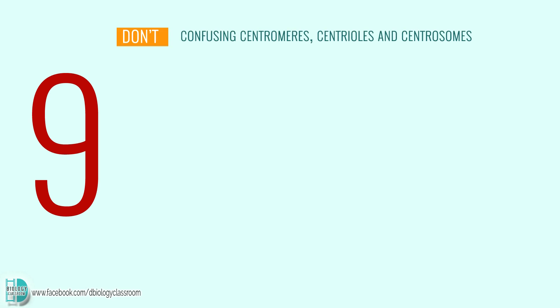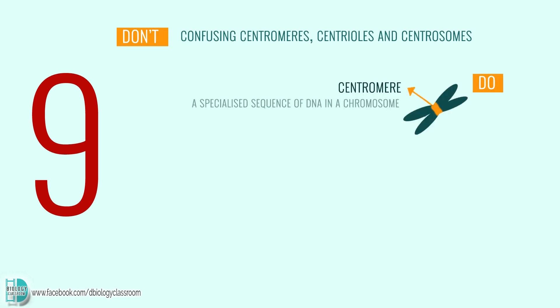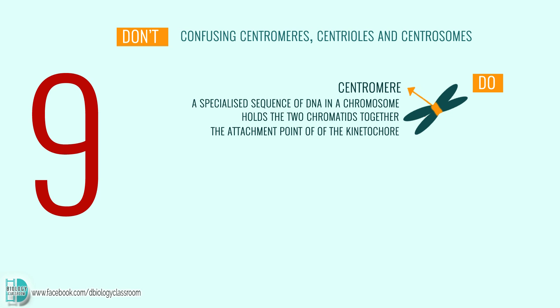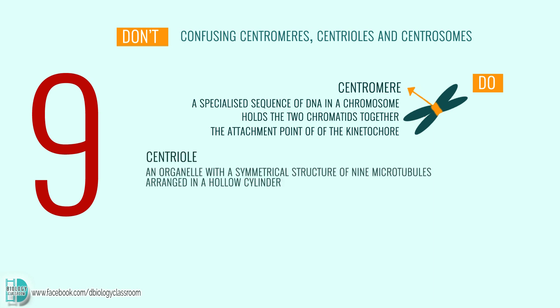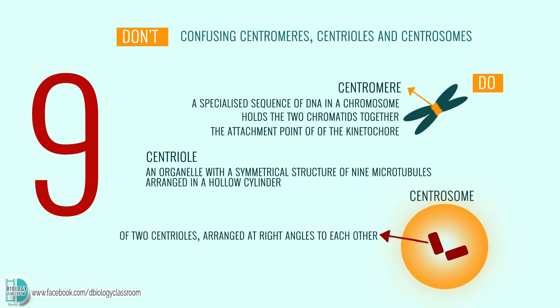Number 9: confusing centromeres, centrioles, and centrosomes. The centromere is a specialized sequence of DNA in a chromosome that holds the two chromatids together. It is also the point of attachment of the kinetochore, a structure to which the microtubules of the mitotic spindle become anchored. A centriole is an organelle with a symmetrical structure of nine microtubules arranged in a hollow cylinder. A centrosome is made up of two centrioles arranged at right angles to each other inside a mass of cell material containing about 100 different proteins.